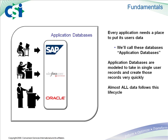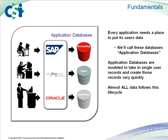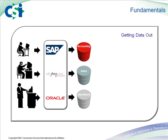Whether it's a custom developed application by your company, or a purchased application, the users will need something to interact with. Now, every application needs to have a place to put its users' activity, or the data. So what you'll likely find is that each application in your company has its own databases. One thing that's important to know about an application database is that its design is optimized for receiving a single record of data at a time. So you can almost think of it like a sponge. This ultimately becomes important when we talk about getting information out of the database.